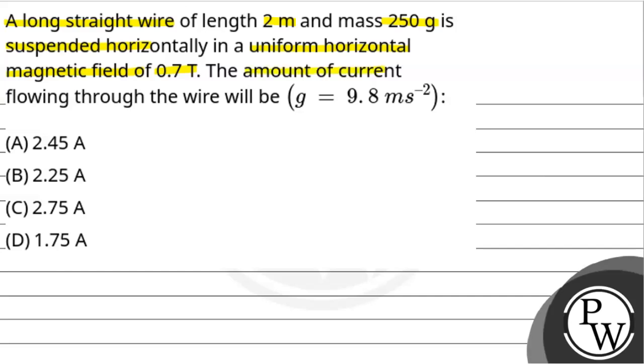The amount of current flowing through the wire will be, with value of g equals 9.8 meter per second square. So according to the question, the straight wire of length 2 meter and mass 250 gram is suspended in this way into a uniform horizontal magnetic field. The magnetic field will be in this direction, and in this field the long straight wire is hung.